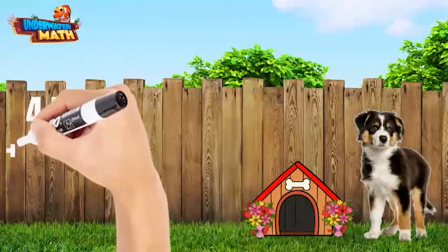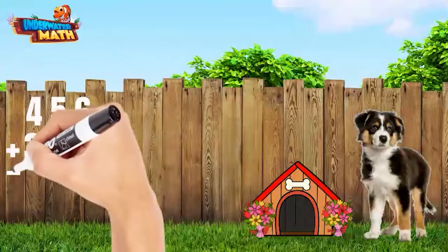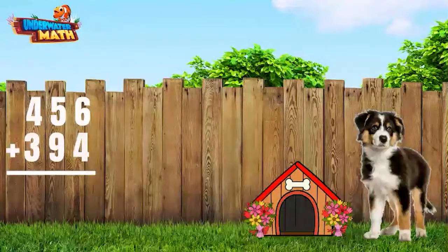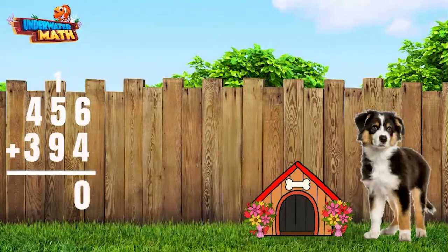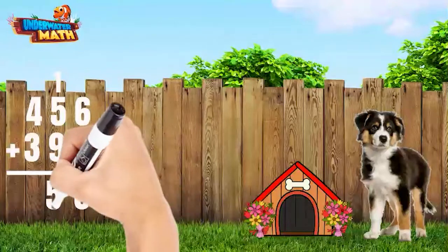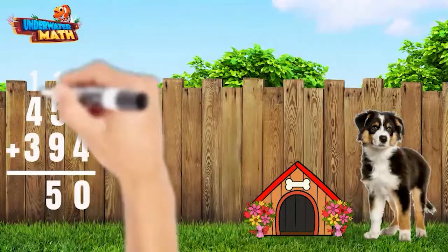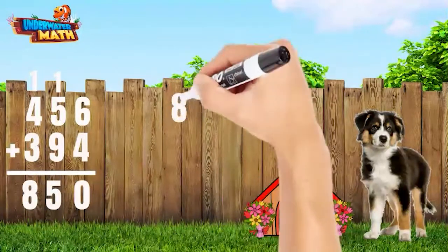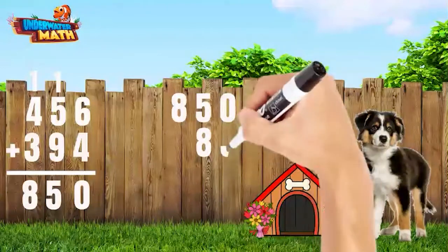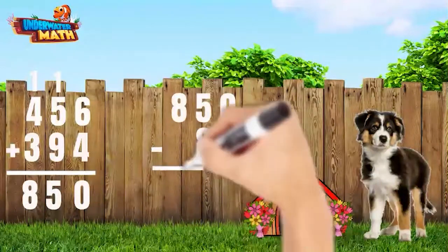In April 456 flowers grew, and another 394 in May. I am going to add these together to see how many flowers we had. Six plus four equals ten — carry the one. Five plus nine plus one equals fifteen — the five goes at the bottom and we carry the one. Four plus three plus one equals eight. We had 850 flowers in May. Then I picked 83, so let's subtract 83 from 850 to see how many flowers we had left in May.